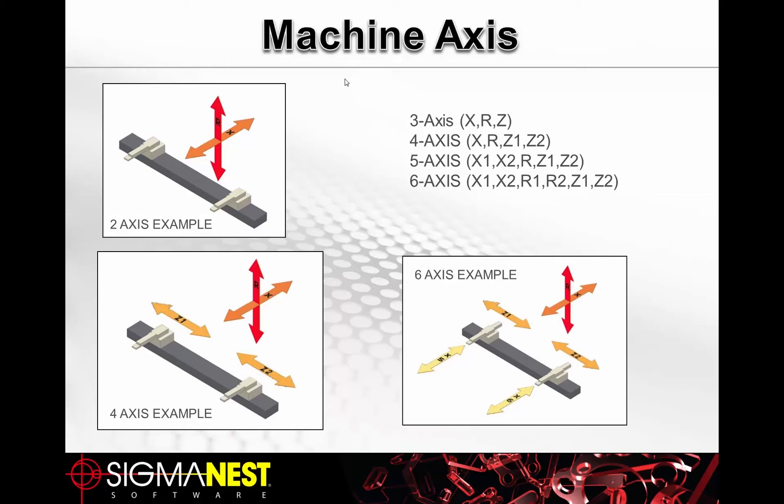On the six-axis machine, the machine is now able to move the fingers independently — left or right, forward or back — and you still have the overall forward and back motion of the machine as well.